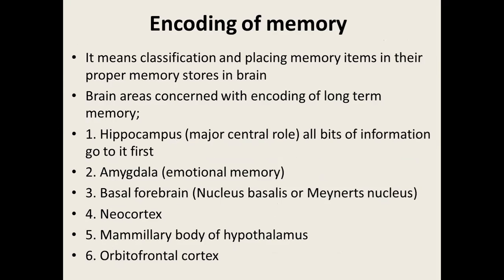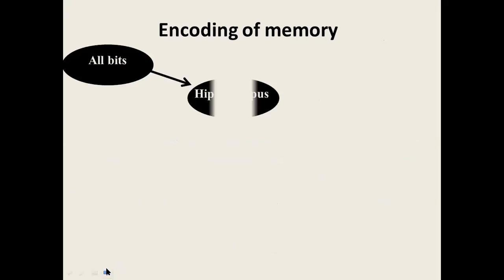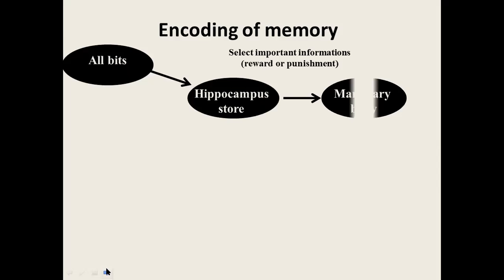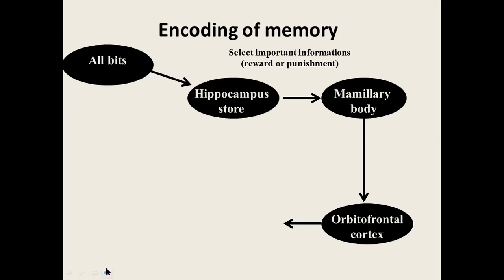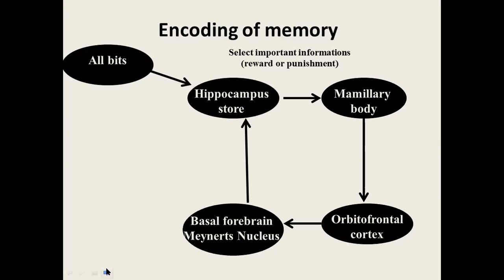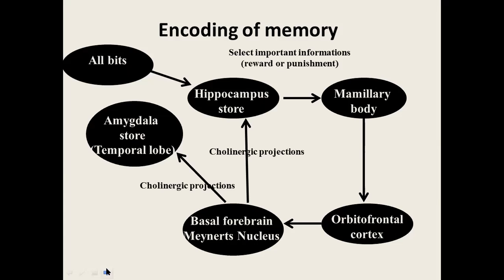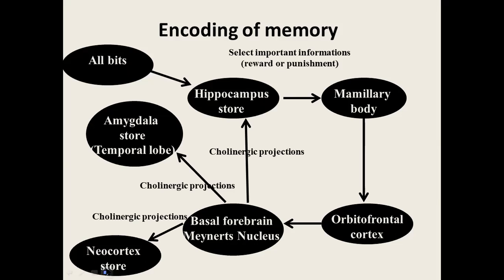The encoding of memory involves the hippocampus, amygdala, basal forebrain, neocortex, mammillary body, and orbitofrontal cortex. The hippocampus selects information, which then goes to the mammillary body, then to the orbitofrontal cortex, then to the basal forebrain, and back to the hippocampus. Cholinergic projections also go to the amygdala in the temporal lobe and to the neocortex, distributing the encoded information to different areas.